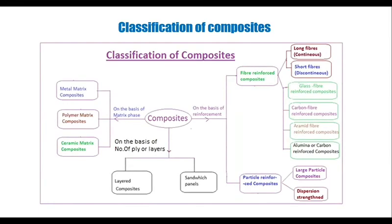Classification of composites. The composites are mainly classified into different types based on three factors: matrix phase, reinforced phase, and the number of layers present in the composite material.